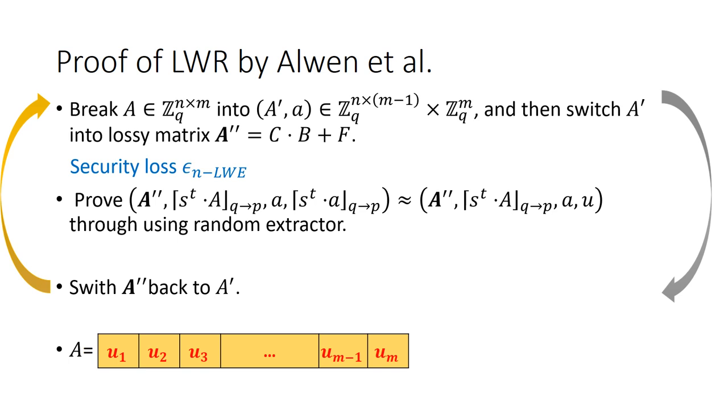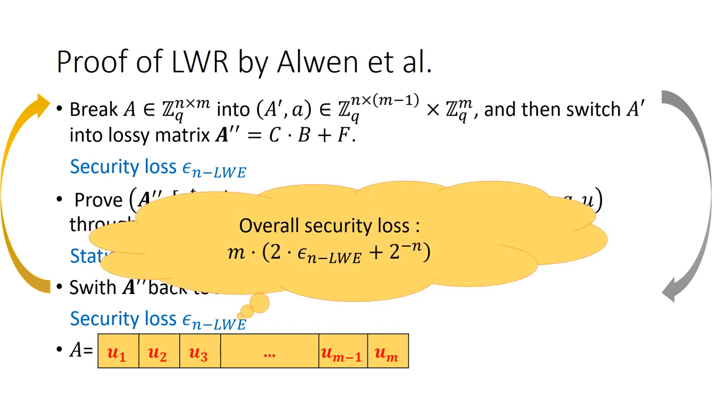Then, let us analyze the reduction loss in this process. Basically, the first step leads to epsilon security loss, the second step is statistically close, and the third step leads to epsilon security loss. As a result, the overall security loss is 2 times epsilon plus 2 to negative n times m.